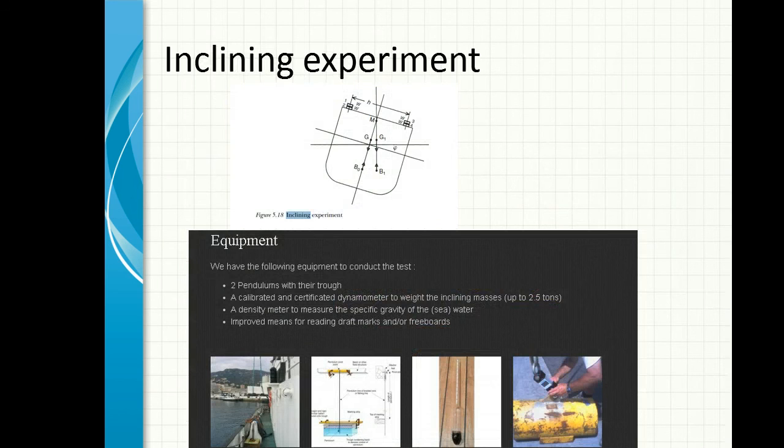Another very important aspect of stability is the inclining experiment. Before a stability booklet is finalized, it is important to know when the ship is constructed, what is the position of the center of gravity. Because when the ship is constructed, still there are many weights to come in, many weights to go off. But you need a good approximation of where the center of gravity is so that your design center of gravity and your actual center of gravity are corrected and you make the corrected final stability booklet.